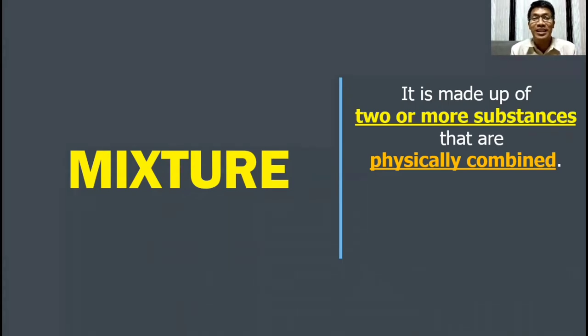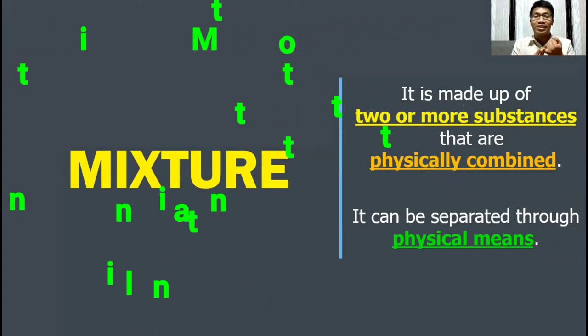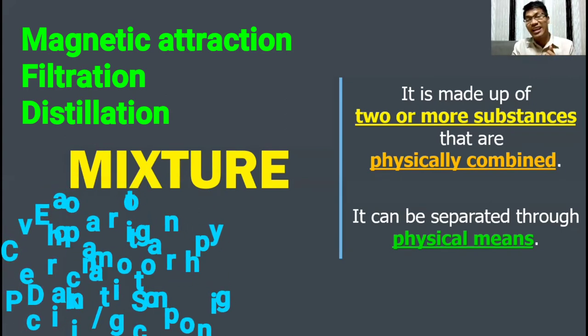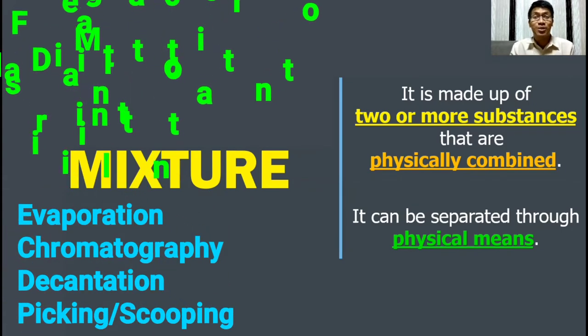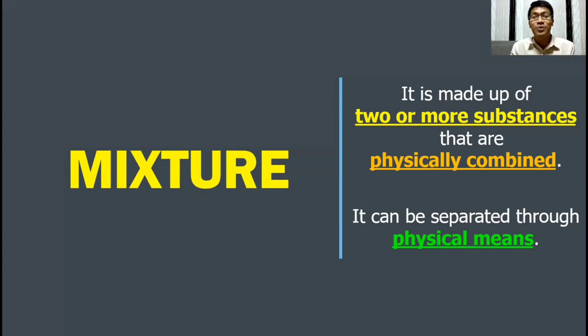Sir, ano pong ibig sabihin ng physically combined? Ibig sabihin, hindi ito nag-undergo ng kahit anong chemical reaction. Talagang pinaghalo lang sila physically. If a mixture is physically combined, therefore it can also be separated through physical means. What are the examples of separation techniques applied in mixtures? We got magnetic attraction, filtration, distillation, evaporation, chromatography, decantation, or even simple picking and scooping. As long as it doesn't involve any chemical reactions. A lot more of this will be discussed in my next video about separation technique.